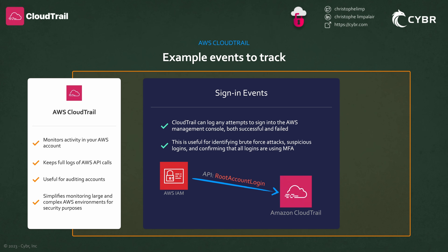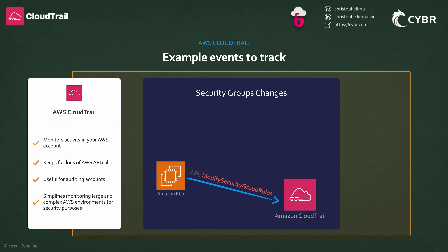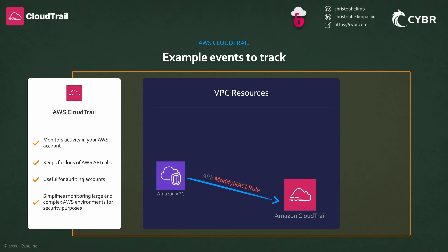You can also set up monitoring and alerting for any time someone logs in using your root account, because root accounts should almost never be used. And so if someone is using one, you should get notified, and you can use CloudTrail's logs in order to do that. CloudTrail also has the ability to log changes to security groups. A change in a security group can introduce, even by accident, a security hole in your AWS environment, and so you should monitor these changes very closely and ensure that they occur as part of a change management process.